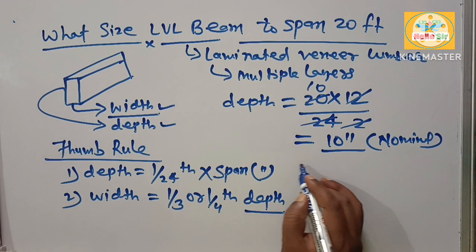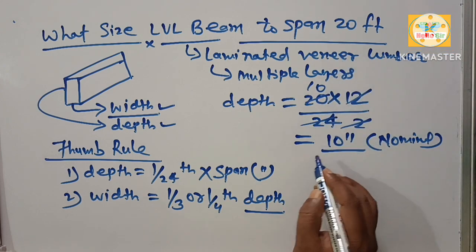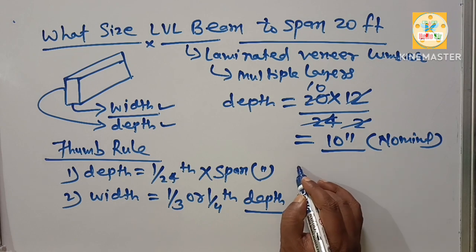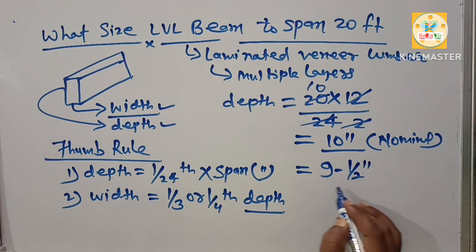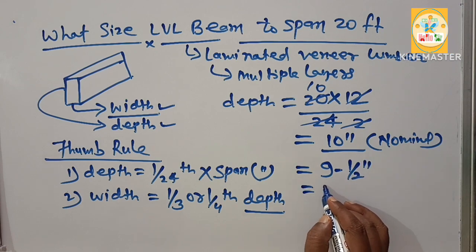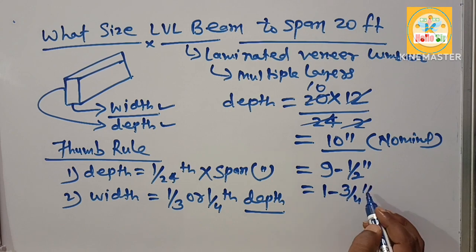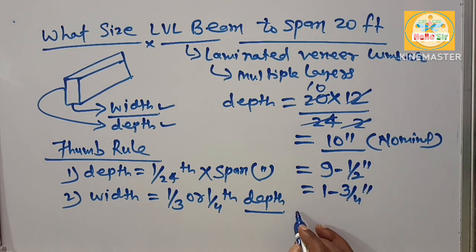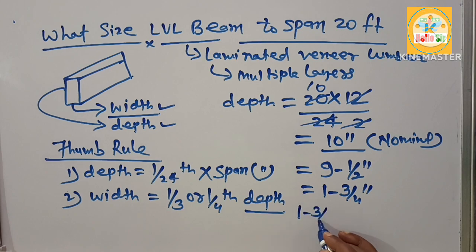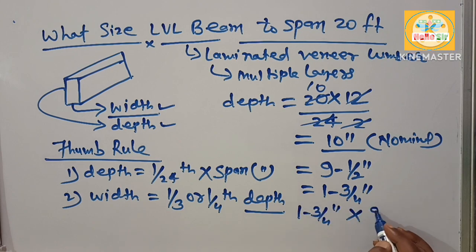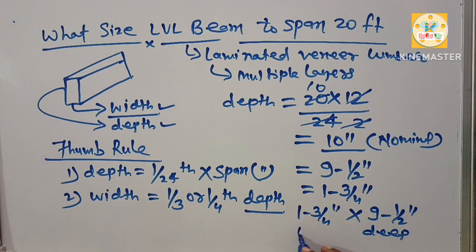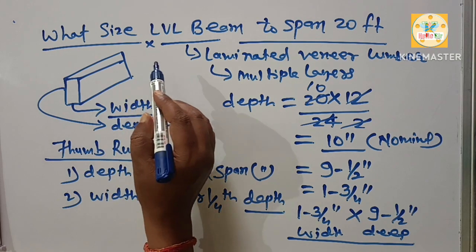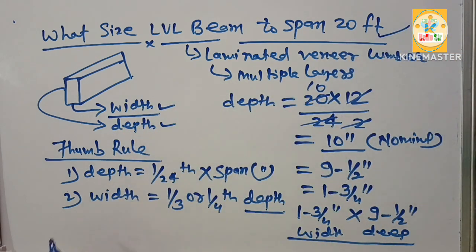It means to span 20 feet, your depth should be actual 9 and a half inches, and their width of single ply is 1 and 3/4 inches. That's why you need something like 1 and 3/4 inches width and 9 and a half inches deep. This one is the correct LVL beam size needed to span 20 feet. Thank you.